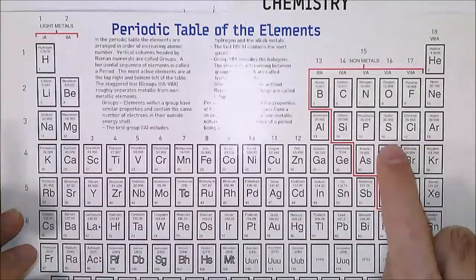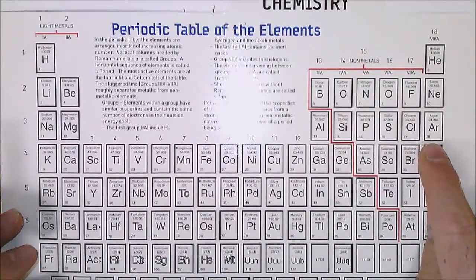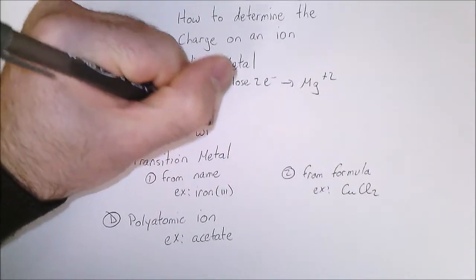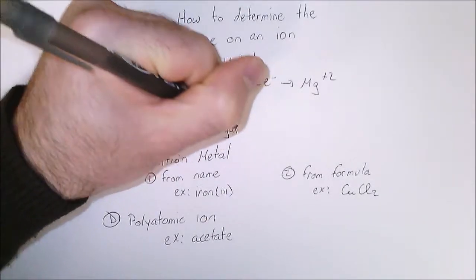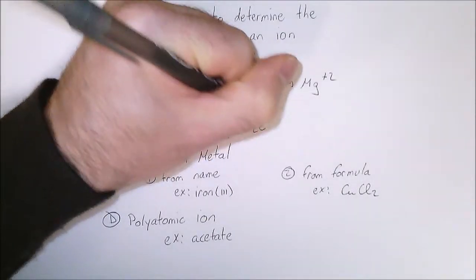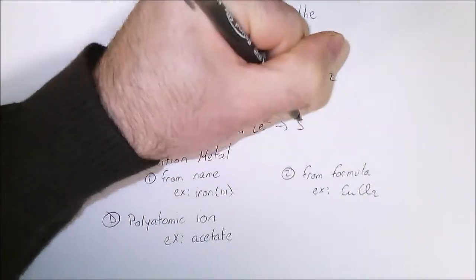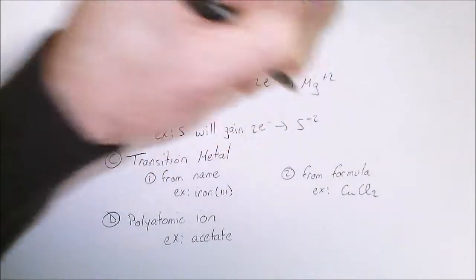16 wants to be like 18. It will gain two electrons. When it gains negatives, it will itself become negative and will become negative 2.